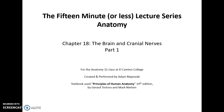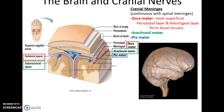Fifteen minute or less lecture series on human anatomy, chapter eighteen: the brain and cranial nerves, part one. The brain is surrounded by the meninges — cranial meninges, cranial because they are in the cranial cavity — and they are continuous with the spinal meninges.